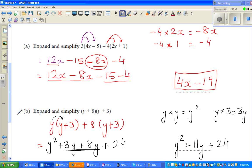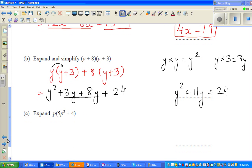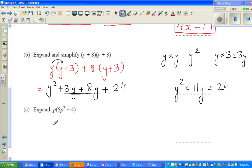p times 5p² is 5p³, and p times 4 is 4p. So your answer is 5p³ plus 4p. See you in the next video.